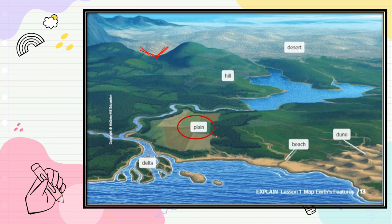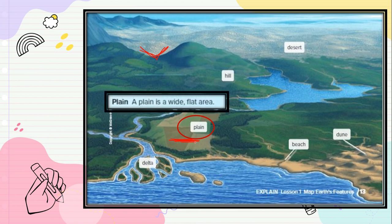A plain is a wide, flat area of land. If you look at it, there is nothing there — it is just flat. Plain means flat.